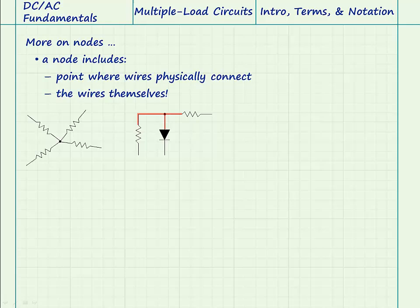Here's another example. Again, it is the entire set of wires which are joined together that make an electrical node, not just the point or points where they are physically connected.